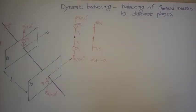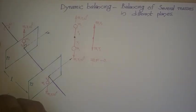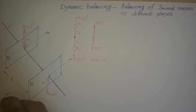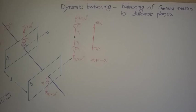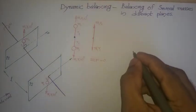But is this system actually in balance? A system is said to be in balance only when the net force as well as the net moment is zero. So we also need to check the moment, for which we have to view the system from the side.